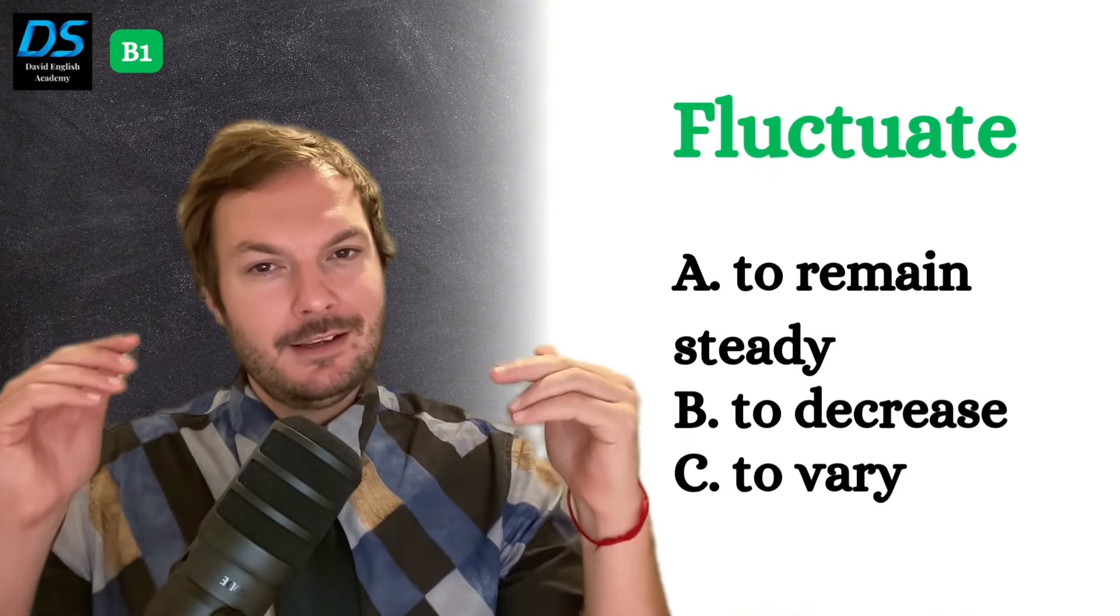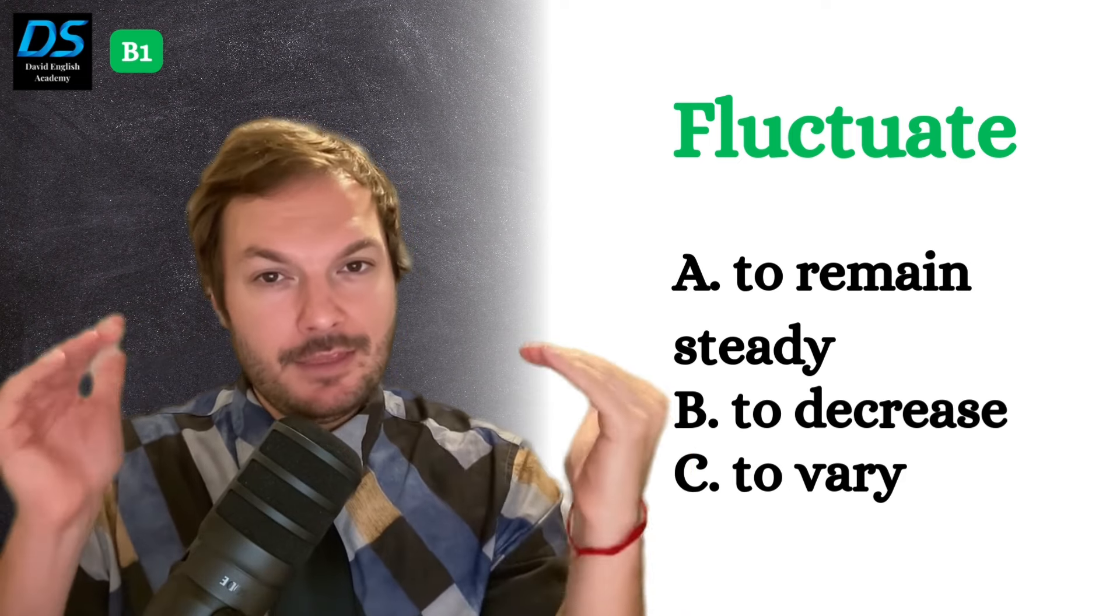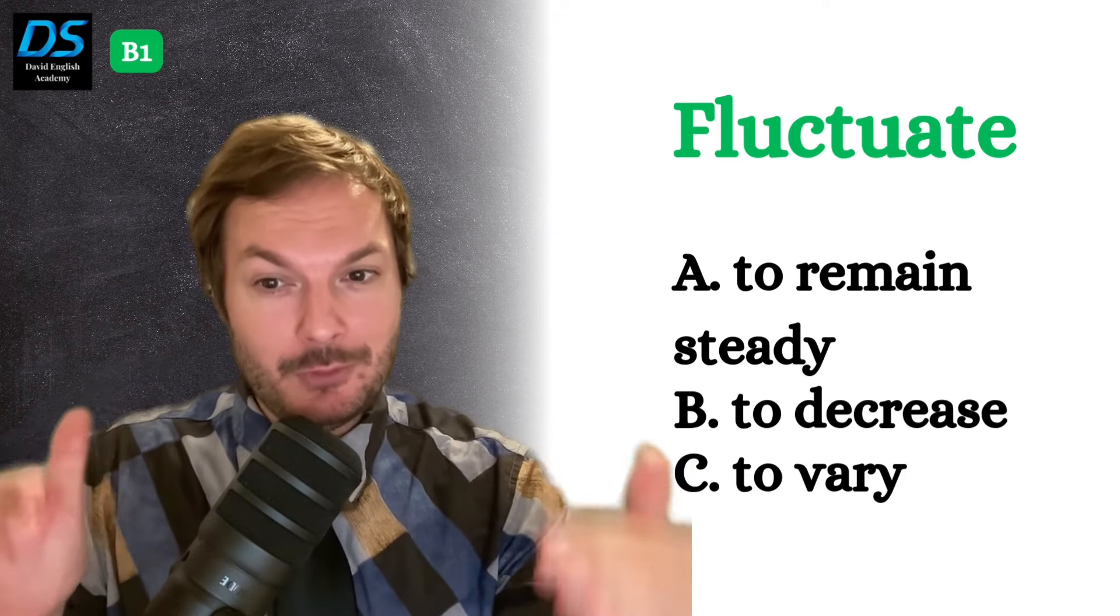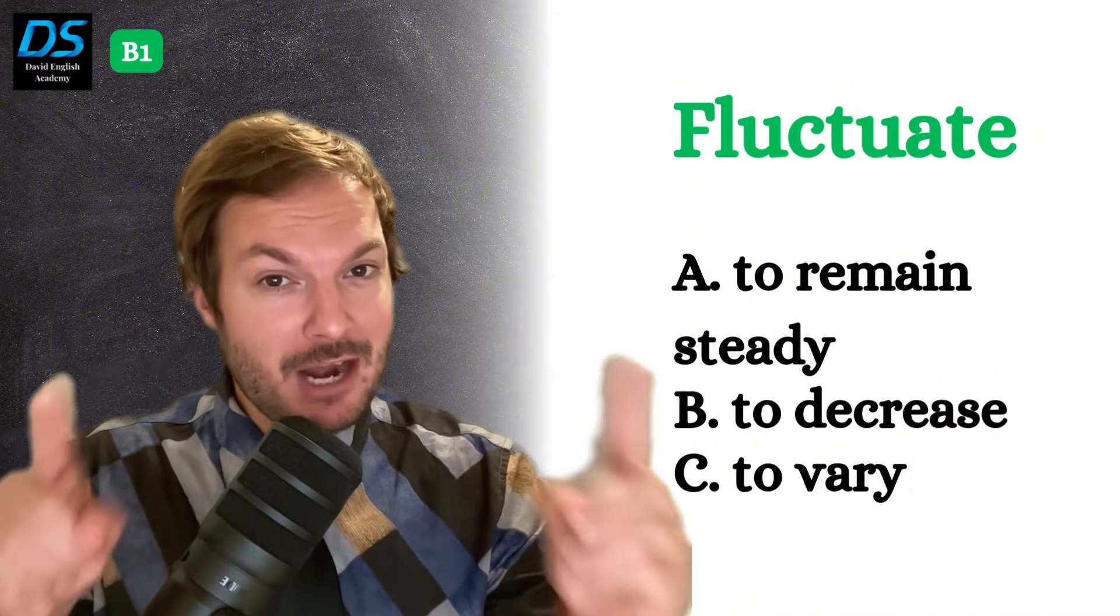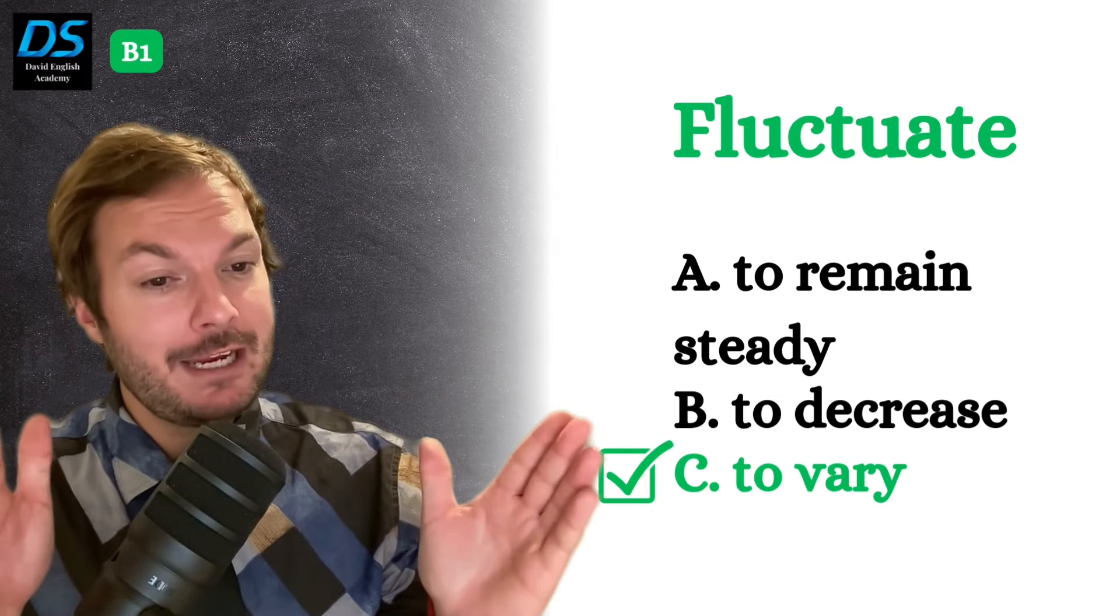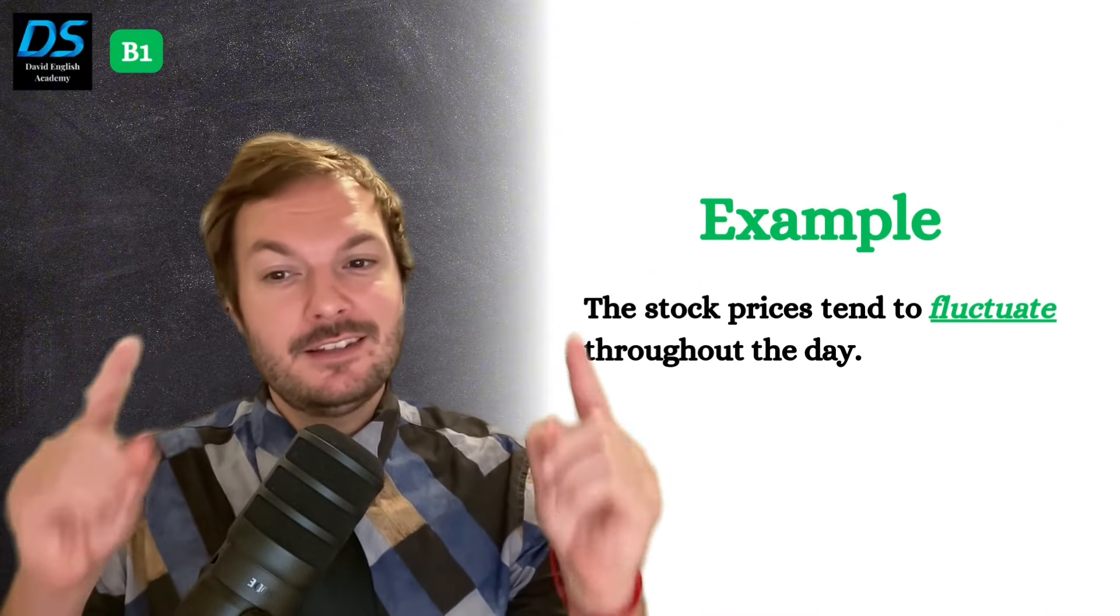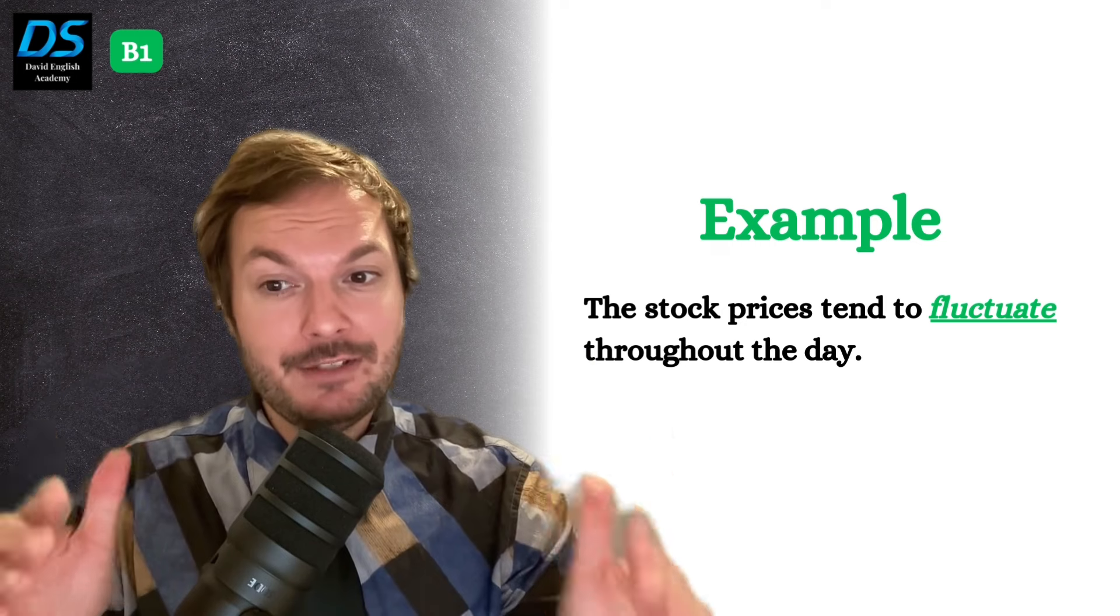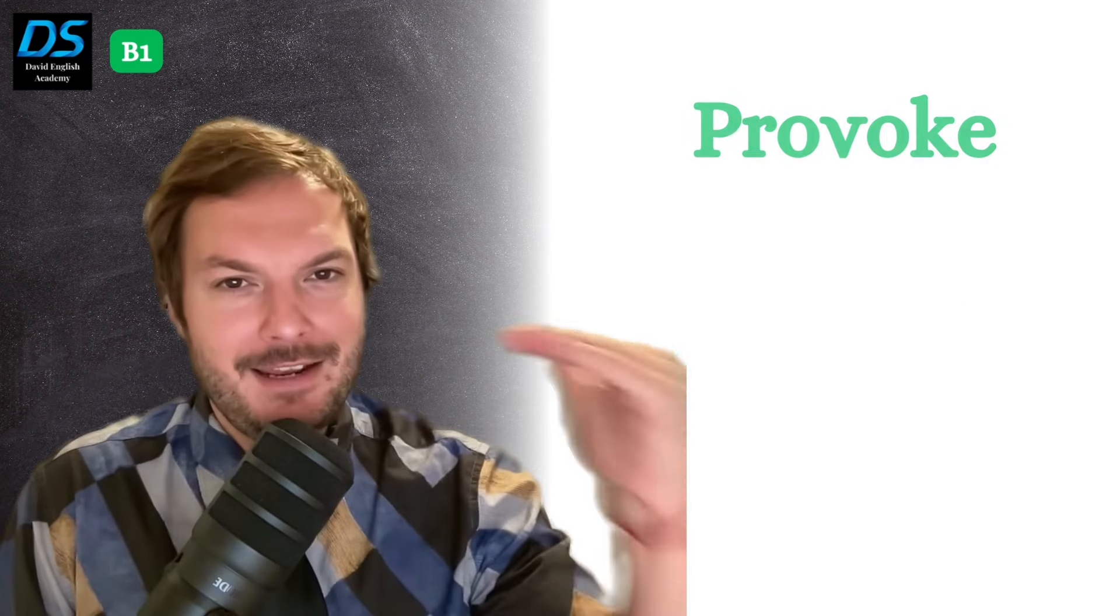Next word. Fluctuate. Does this word mean to remain steady, to decrease, or to vary? To fluctuate means to change, or vary irregularly. Example. The stock prices tend to fluctuate throughout the day.